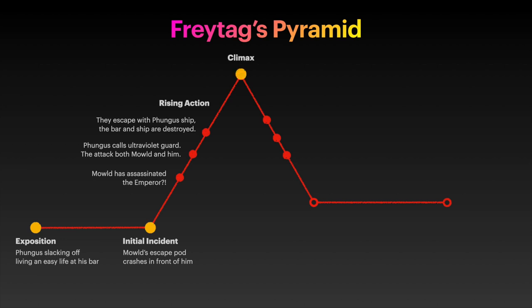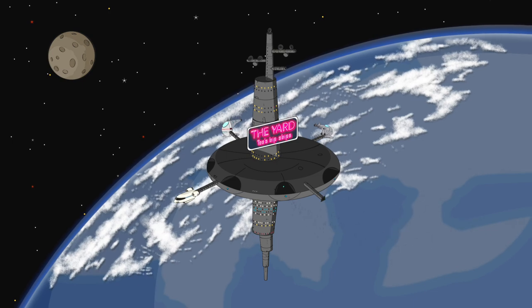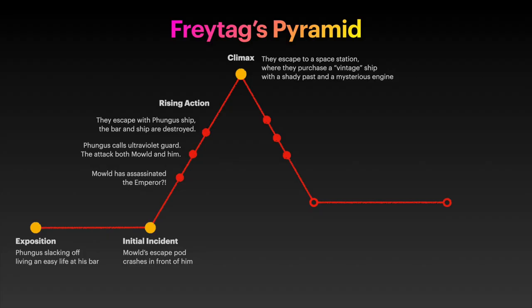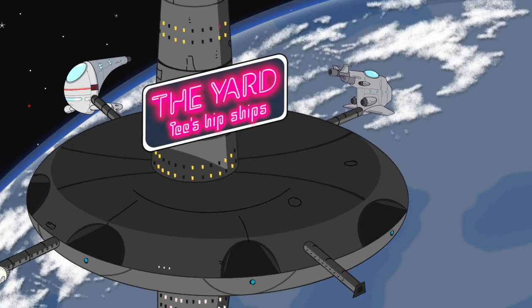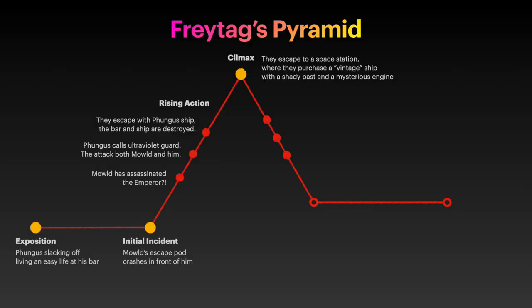Then we have the climax, which is a bit hard to understand because it's not normally the showdown — that is not the climax. The climax is the emotional high point, where things are looking really good. In our case, it's where they get away and flee to a space station where they are safe for now. They purchase a new ship so they can finally flee to safety. The ship and its engine will play a central role in future episodes, so you get introduced to its shady past, the weird ghost story, and the mysterious engine — a foreshadowing of things to come.